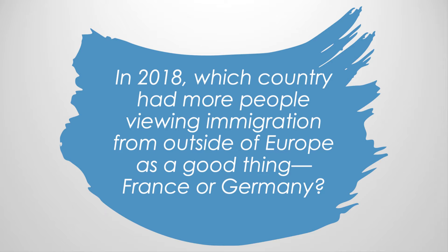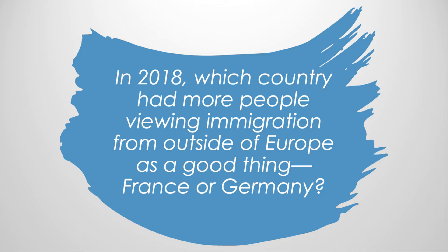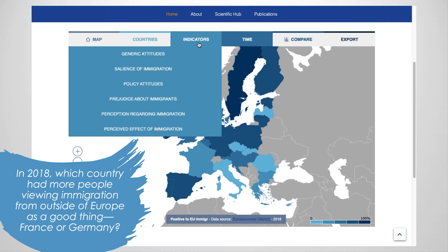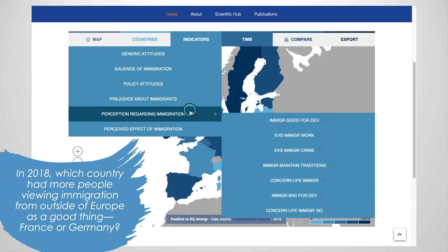Here's a good question to start with. In 2018, which country had a higher amount of people viewing migration from outside of Europe as a good thing — France or Germany? To answer this question, we need to look at our list of indicators to see which one is closest to our question. There are six general categories, and it looks like the fifth one, called Perception Regarding Immigration, is what we need.